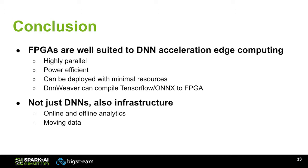FPGAs are a great solution for this kind of edge computing because they're highly parallel, more power efficient than other options, and can be deployed with minimal resources. Using DNN Weaver, you can take TensorFlow and ONNX designs and directly write them to FPGAs. The final point — and this is something many talks at this conference dealing with ML discuss — is that to create an enterprise-level application, it's not just the neural networks, it's also the infrastructure. You're going to need logging, monitoring, verification, and all sorts of online and offline analytics, and just moving the data between clusters. To deploy this at enterprise scale, you really need something like Spark. Thank you — we'll be happy to take any questions.